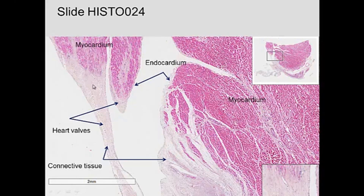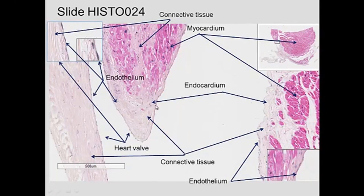In the endocardium you have endothelial cells lining, but also the valves. You can see where the myocardium through connective tissue is attached to the valves. The valves are connective tissue lined with endothelial cells, so the blood always touches endothelial cells. A higher magnification image shows the endocardium — endothelial cells, subendothelial connective tissue — and how that connective tissue attaches to the myocardium.